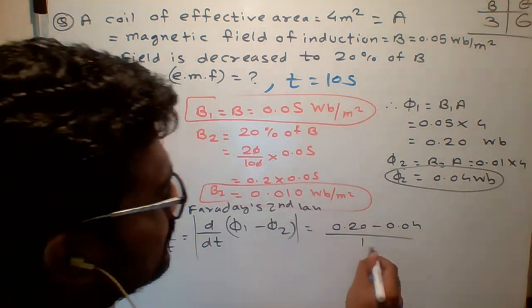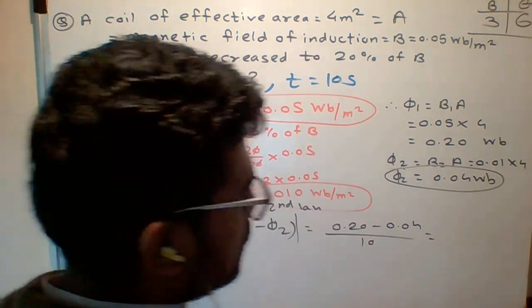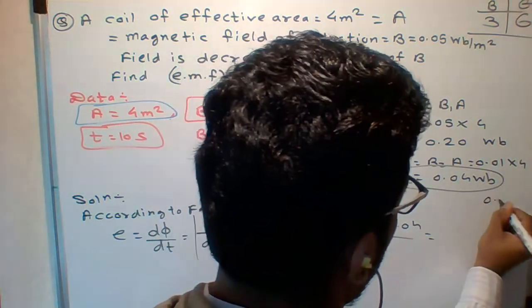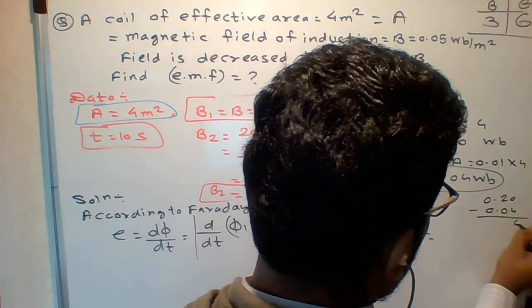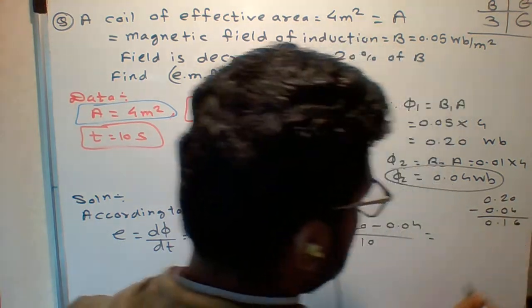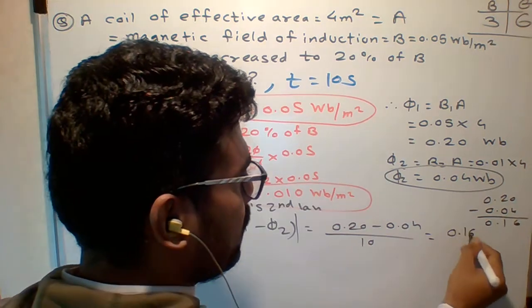So 0.20 minus 0.04, 20 minus 4 is 16, so 0.16 upon 10. So how much EMF we got? 0.016. What is the unit? Volt.